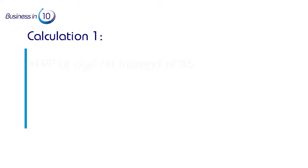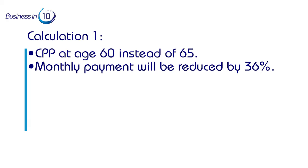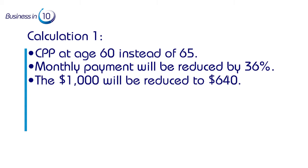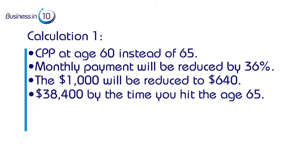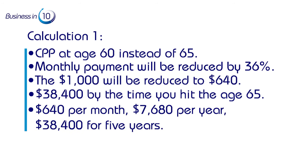Calculation one: if you choose to take CPP at age 60 instead of 65, what would the break-even age be? At age 60, your monthly payment would be reduced by 36%, so instead of $1,000 you would receive $640 per month. By doing that, you will have been paid a total of $38,400 by the time you reach age 65 — that's $640/month × $7,680/year × 5 years.